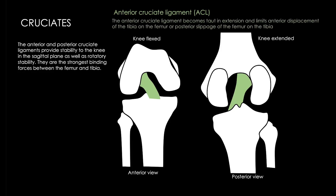The cruciate ligaments have a very important job: they provide stability to the knee in the sagittal plane as well as during rotatory movements at the knee joint. They are the strongest binding forces between the femur and the tibia. They are named anterior and posterior cruciate ligaments with reference to their attachments onto the plateau of the tibia. These ligaments lie within the capsule of the knee joint but are not present inside the synovial membrane — this distinction is important.